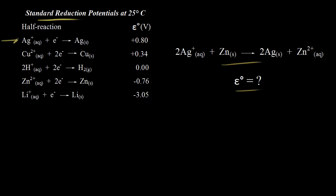If we look at this first half reaction, we see that silver ion — if you add an electron to silver ion, you get solid silver. Gain of electrons is reduction, so this is a reduction half reaction. Looking at the reaction on the right, we can see that we are reducing silver ion to solid silver, so we need this half reaction as it's written — this is our reduction half reaction.